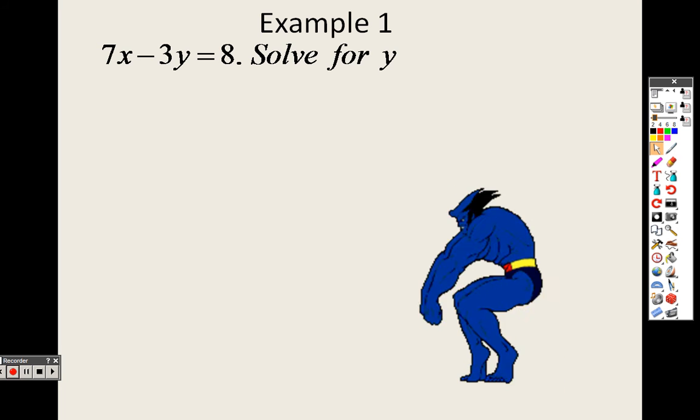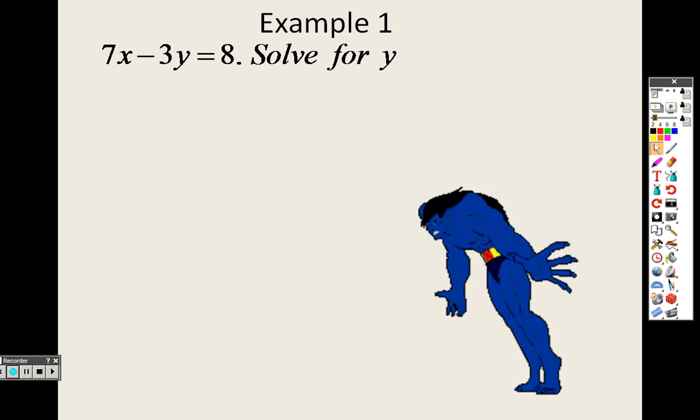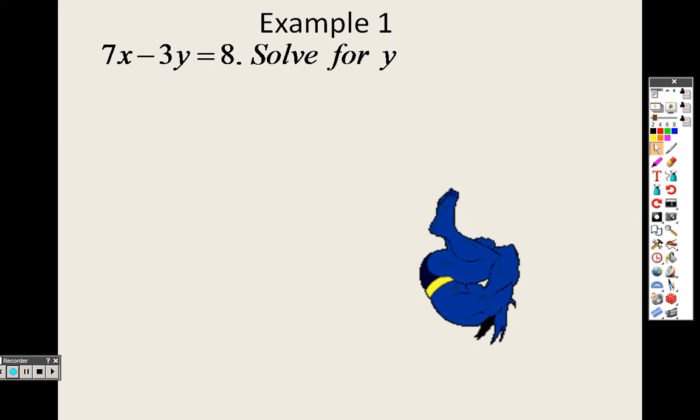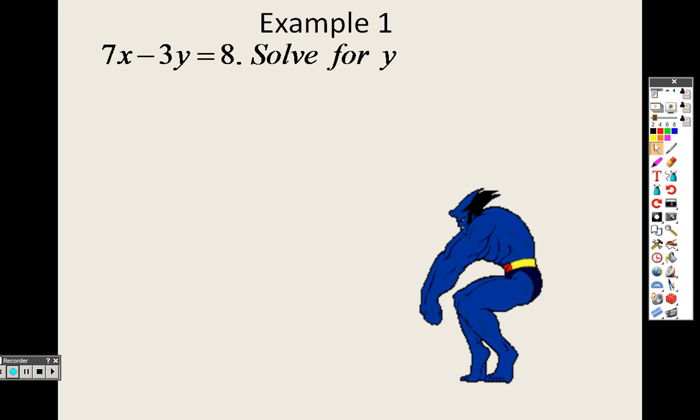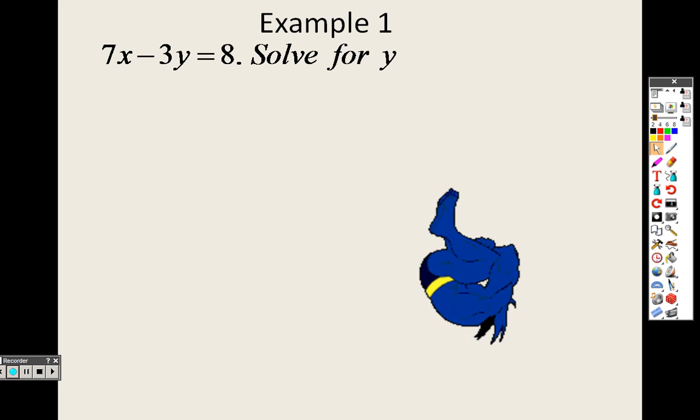Example 1. We have 7x minus 3y equals 8, and I'm saying solve for y. Okay, no problem. We want to solve this problem for y. Anyway, there's two variables, so that means I need to get y by itself.